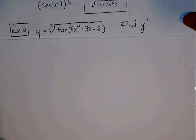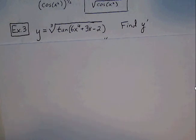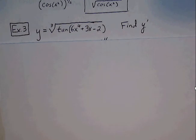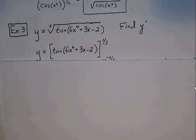Next example: y is equal to the cube root of tangent of 6x to the 4th plus 3x minus 2. Again, we want to rewrite our function with the rational exponent and get rid of the radicals so we can see the different parts and best apply the chain rule. So y is equal to tangent of 6x to the 4th plus 3x minus 2, raised to the 1 third.